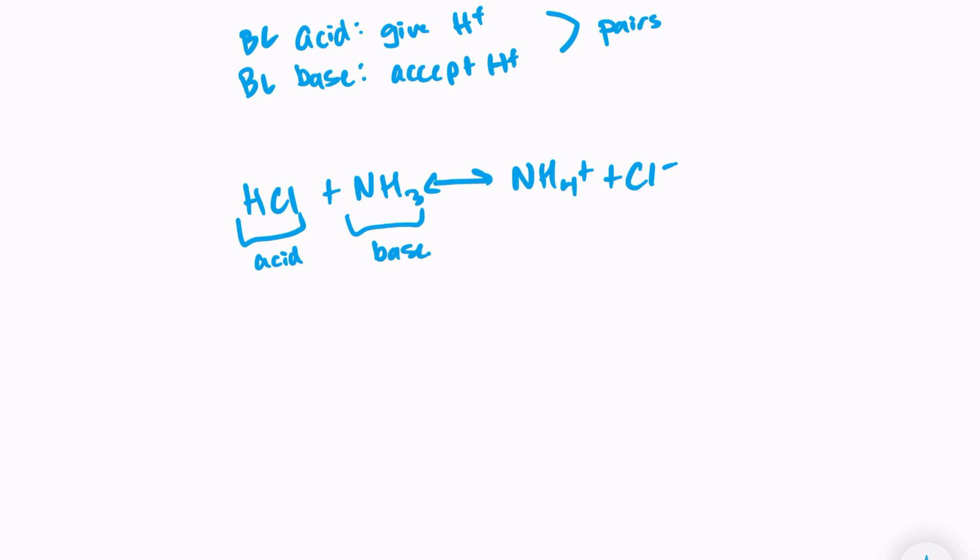So because we have an acid and a base, we have our reaction taking place, and NH4+ and Cl- are formed. So one other thing to note that is very important about conjugate base pairs is that conjugate acid base pairs only differ, they're only different from each other, they only differ by one proton. They only differ by one proton or by one H+ ion.